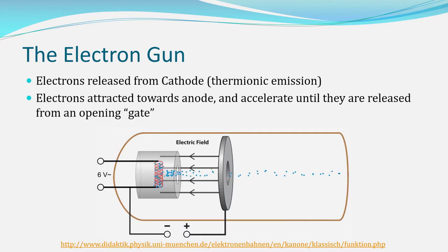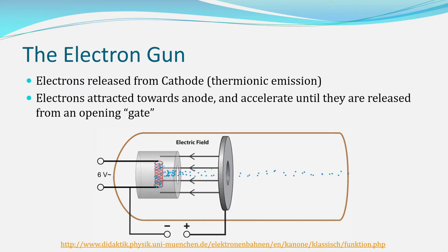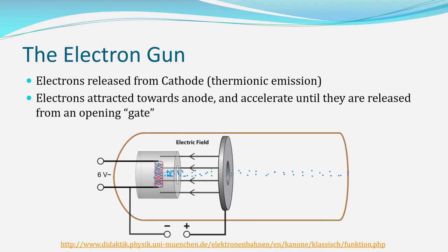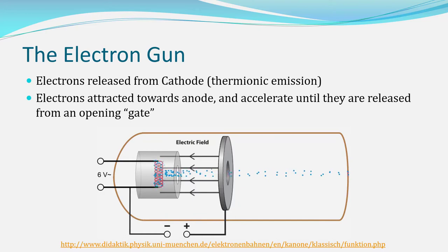Before we get into things too much, I want to talk about the electron gun. It could be argued that this is saved for later on, but since we're talking about the deflection or movement of charged particles due to magnetic fields, we should quickly talk about how we can actually get these particles moving in the first place. This also gives us an opportunity to try all the equations mixed together.